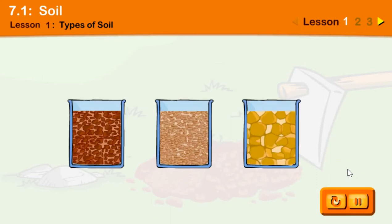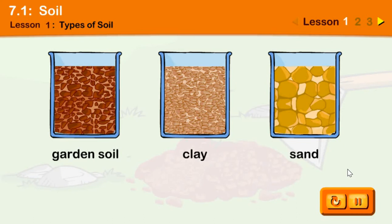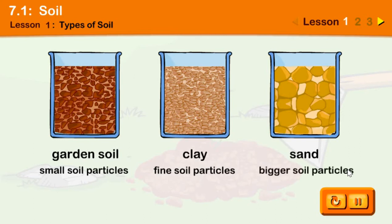There are three main types of soil: garden soil, clay and sand. Let us look closely at the particles of soil. Garden soil has small sized particles. Clay has very fine particles. Sand and small stones are made up of bigger particles.